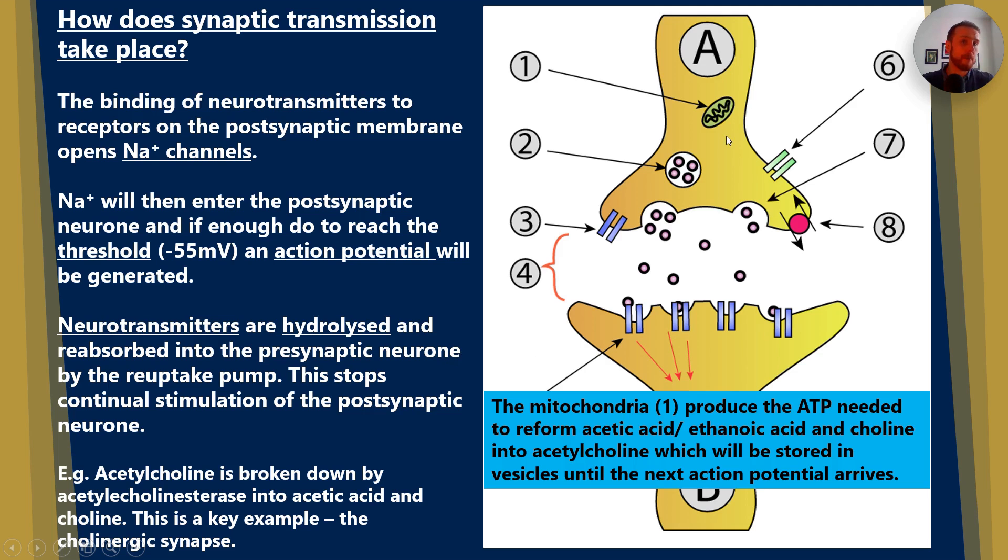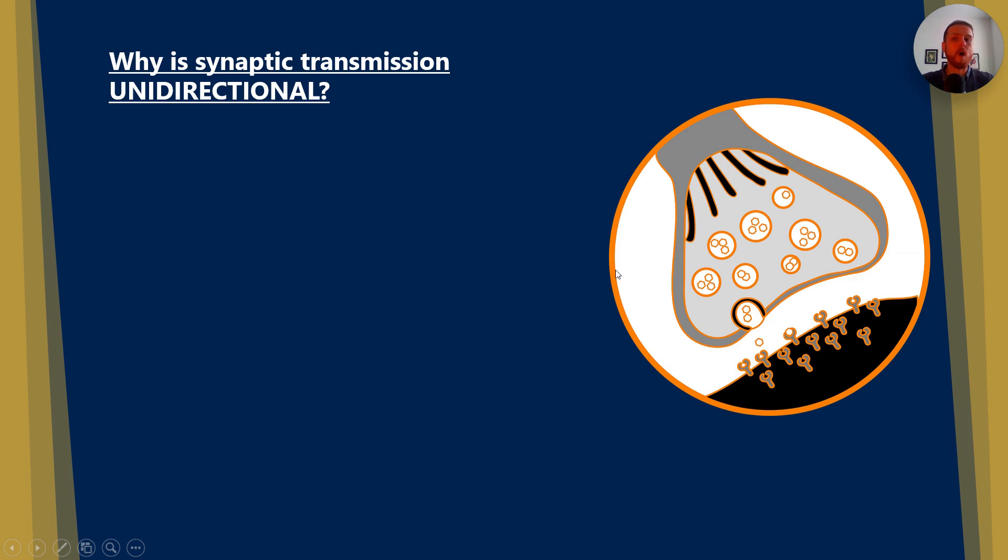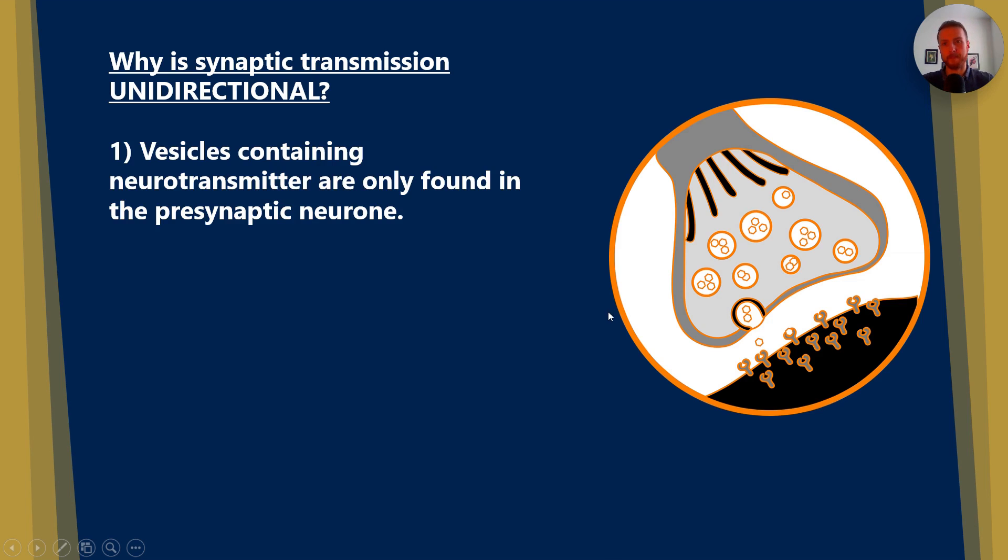So you might have been thinking, what do the mitochondria do? Well, the ATP they produce is needed to reform bonds between the acetic acid and the choline, which will then reform acetylcholine. Now the acetylcholine will be stored in vesicles for future use.